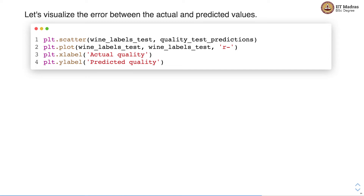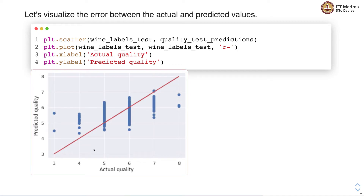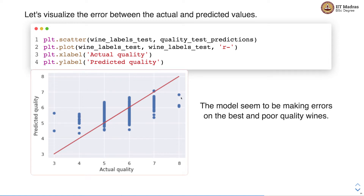Let us visualize the error between the actual and predicted values using a scatter plot that plots the actual wine quality against the predicted quality. For each example we can see a dot — for instance, one point had an actual quality of 3 and we predicted between 4 and 5, and another had actual quality 8 but we predicted slightly less than 7. This plot shows the model makes errors on the best and poorest quality wines, i.e., at the extremes, while performing fairly well on average quality wines.